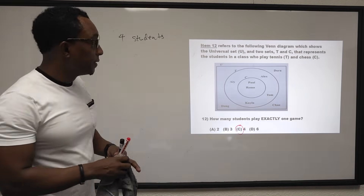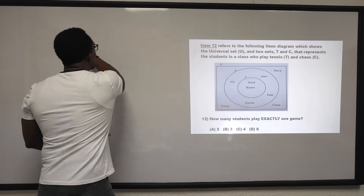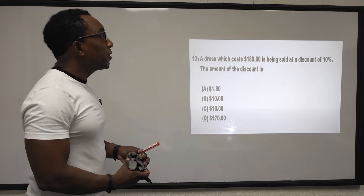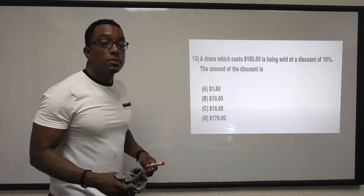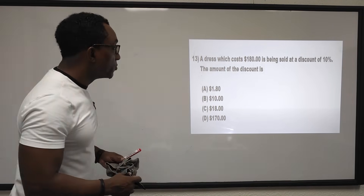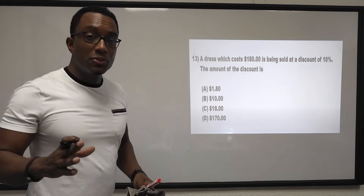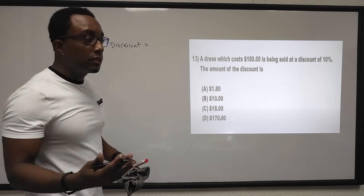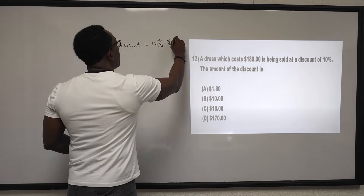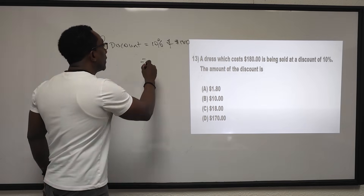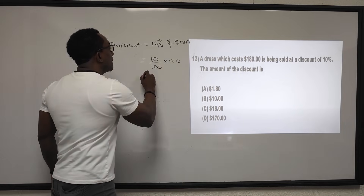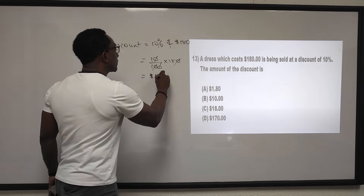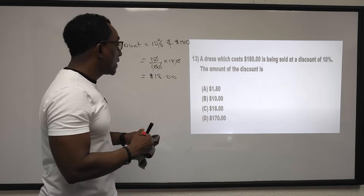Question 13: a dress which costs $180 is being sold at a discount of 10%. The discount is 10% of $180, which is 10 over 100 times 180. Two zeros cancel, leaving $18. The answer is C.